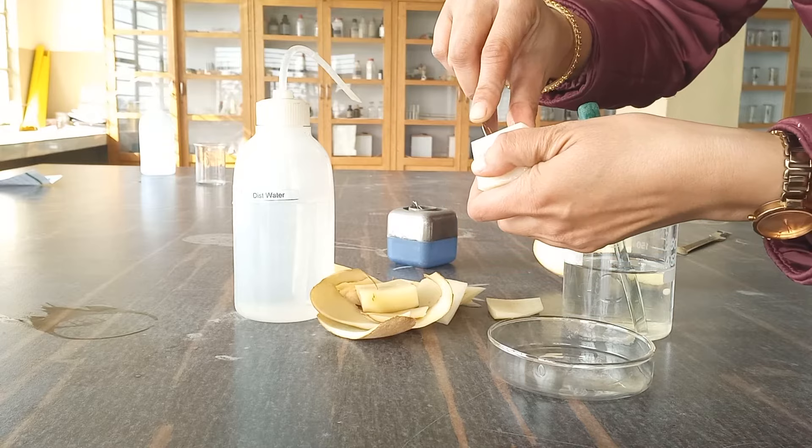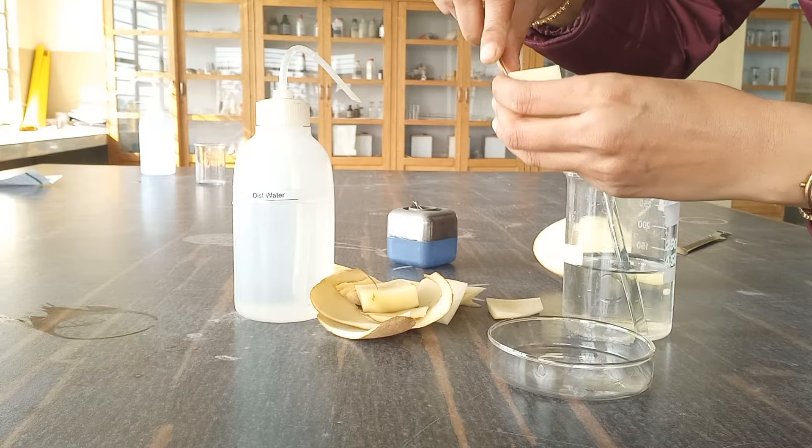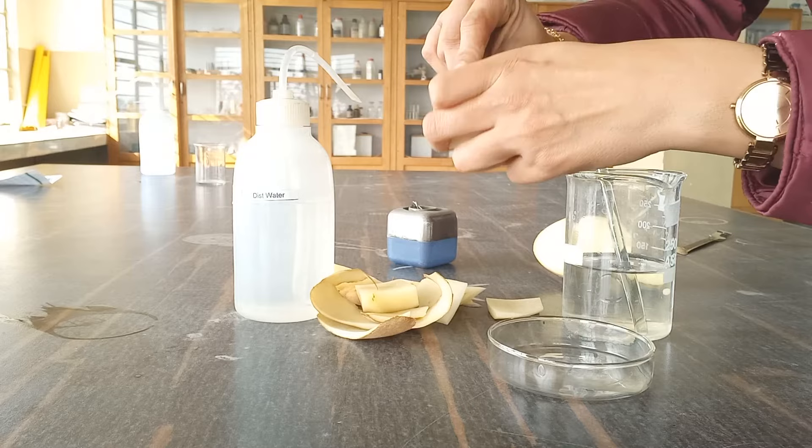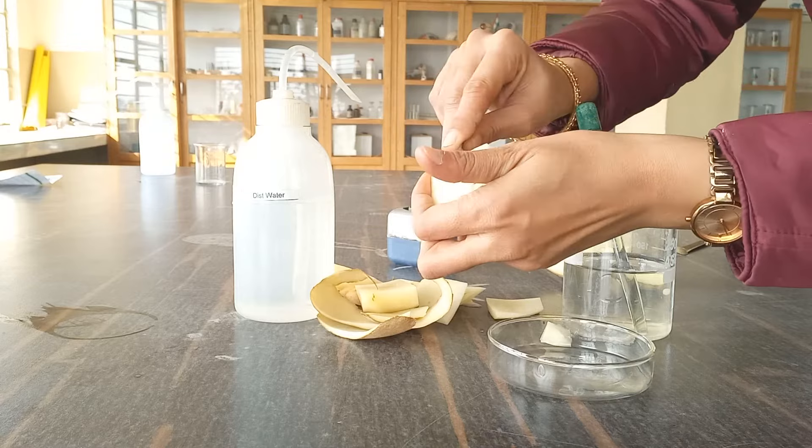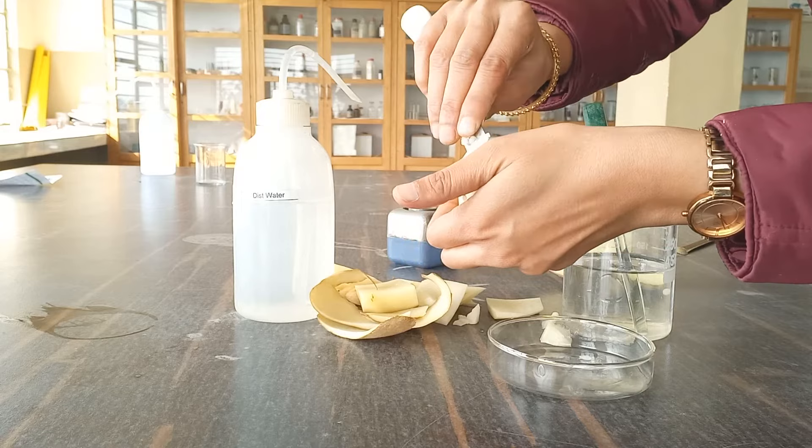And now we are going to make a cavity in this particular potato. So this cavity will be used to put the sugar solution into this. So with the help of the knife, firstly we are going to scrape from the center. And after this we can use the spatula.